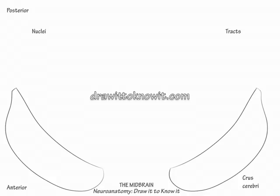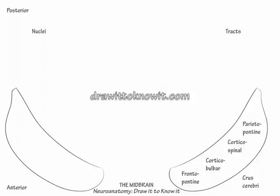Next, anteriorly, draw the bilateral crus cerebri. Divide the center of the crus cerebri into the corticobulbar tracts medially and the corticospinal tracts laterally. In the most medial portion of the crura, draw the frontopontine tracts, and in the most lateral portion draw the parietopontine tracts.